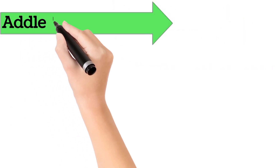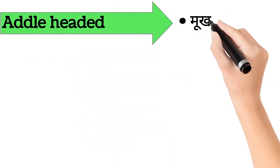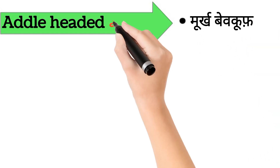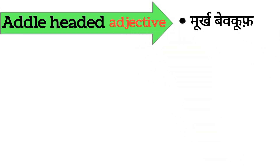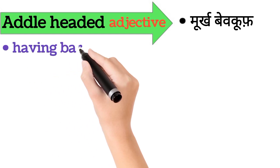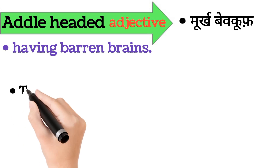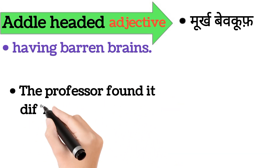Addle-headed. Addle-headed ka aarth hai moorkh bevkoof. Addle-headed word adjective form mein aata hai. It's also called having barren brains. Iska example hai: the professor found it difficult to teach the addle-headed student.